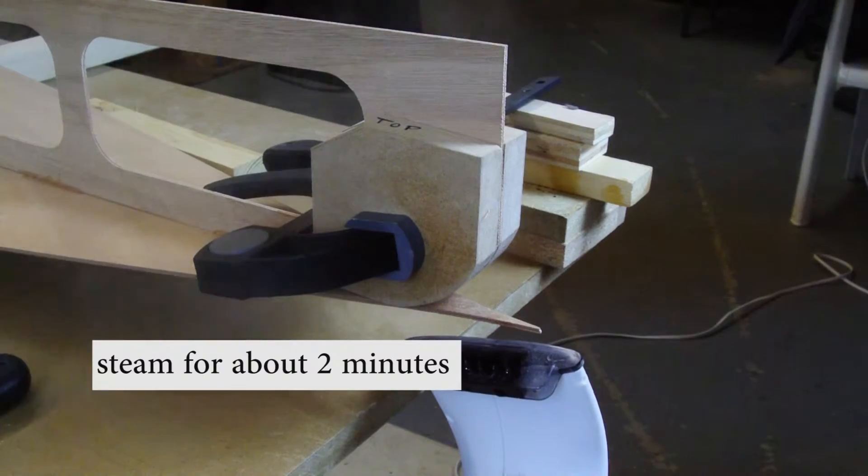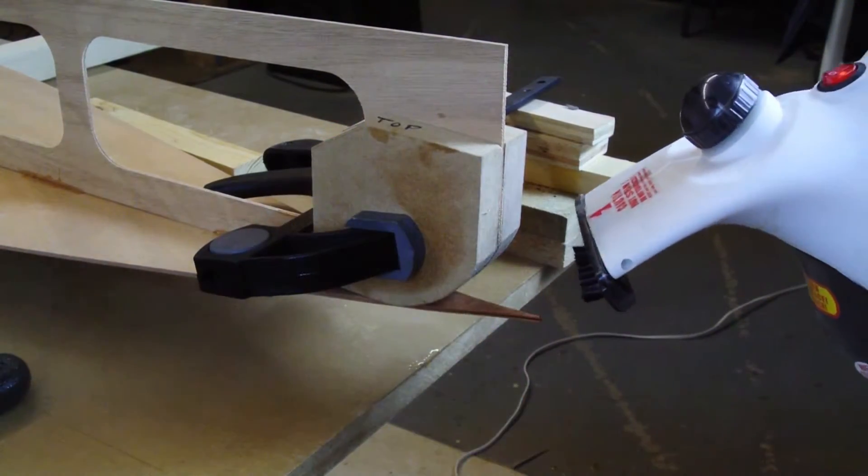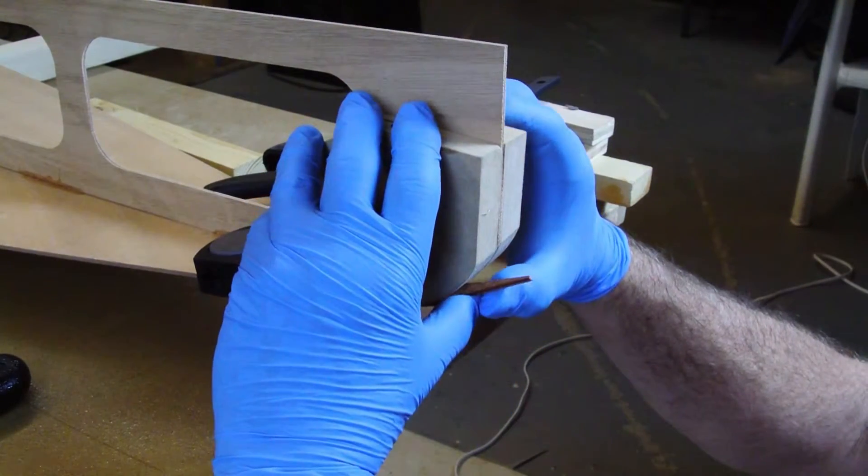After a minute or two you can test the bend. Once the wood tip bends upward easily you can set the steamer down and bring the tip up in contact with the bow curve.